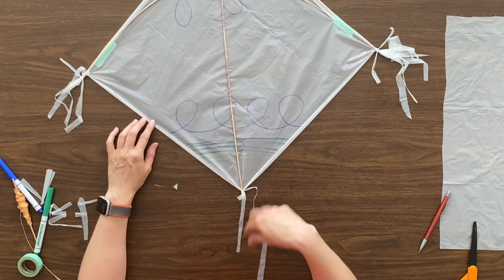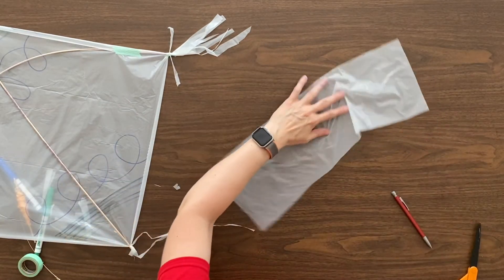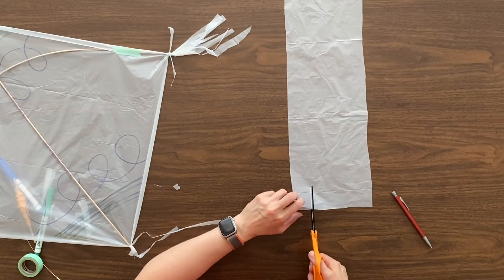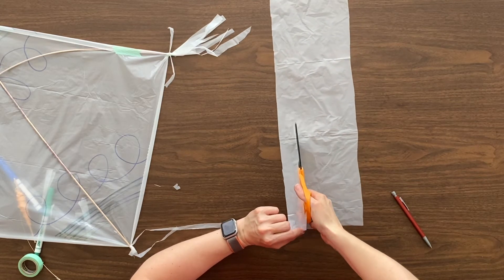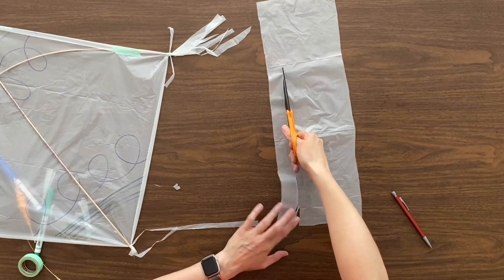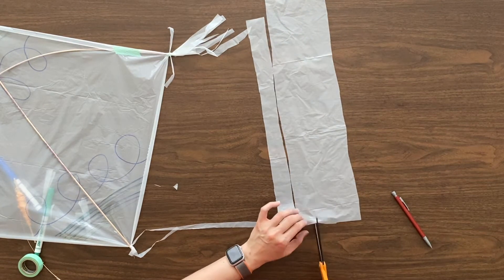Now this kite needs a tail. So here, long rectangle of plastic. You're going to cut some strips.